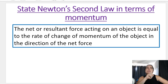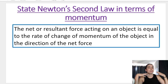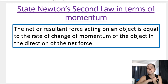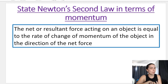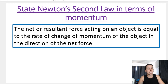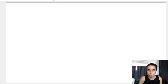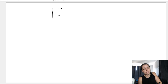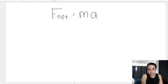Now, jumping into stating Newton's second law in terms of momentum. The definition you need to know is: the net or resultant force acting on an object is equal to the rate of change of momentum of the object in the direction of the net force. Newton's second law of motion in symbols is F_net equals mass multiplied by acceleration.